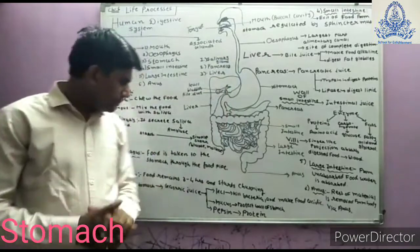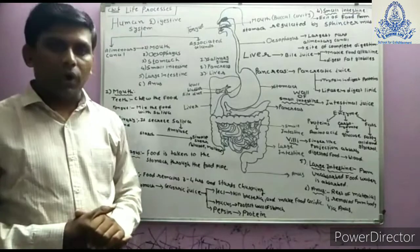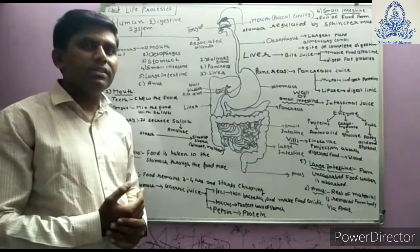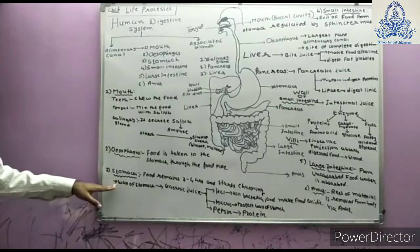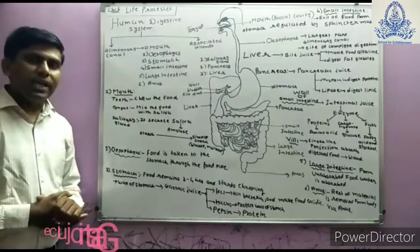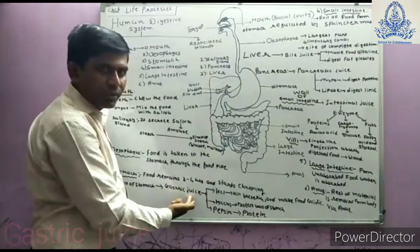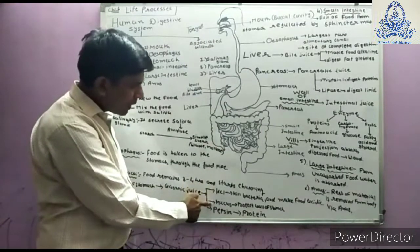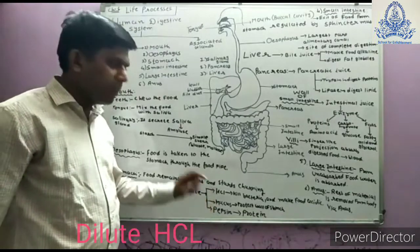When food enters the stomach, it remains there for about three to four hours. During this time, the food starts churning — that means mixing. The walls of the stomach play an important role in digestion. The wall of the stomach secretes gastric juice, which contains dilute HCl, mucus, and pepsin.